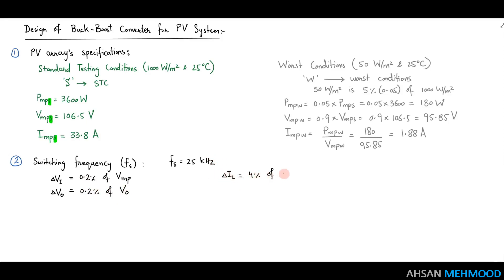Delta V I L is the ripple in the inductor's current waveform and is chosen as 4% of the inductor average current I L, which can be calculated using this equation.